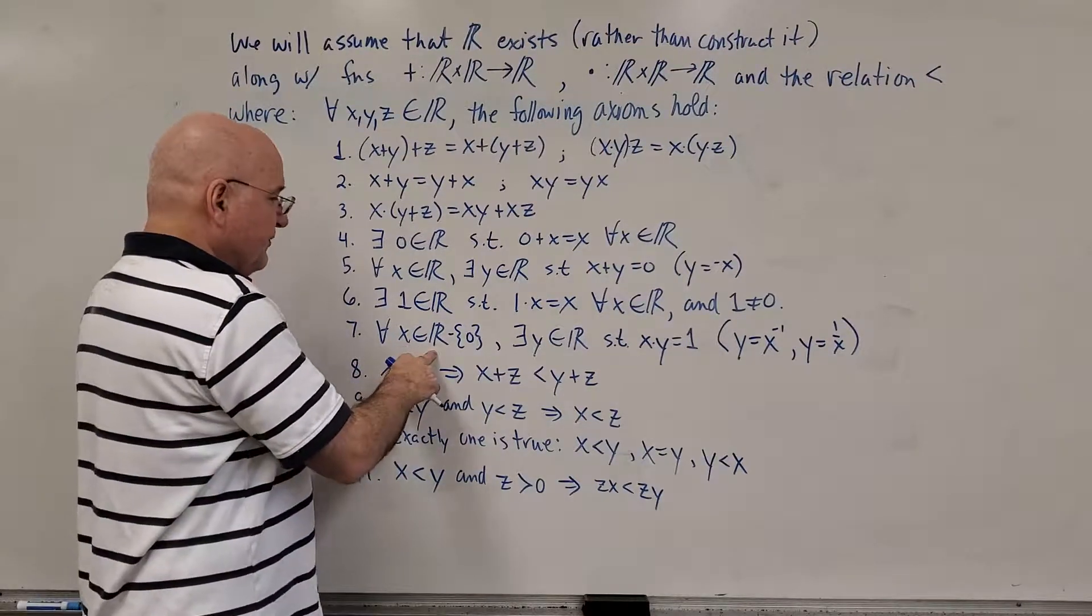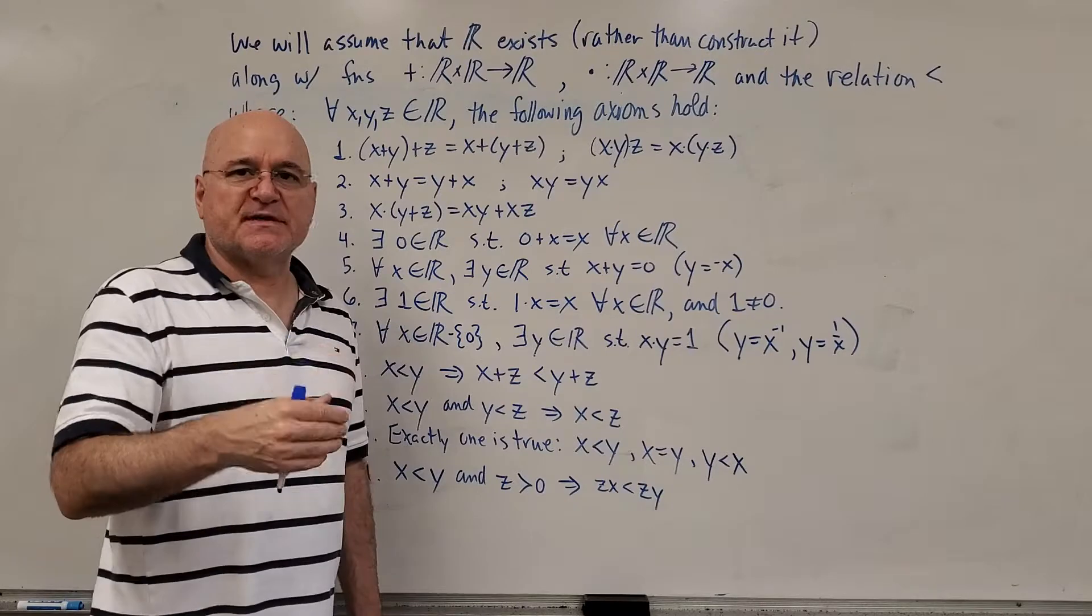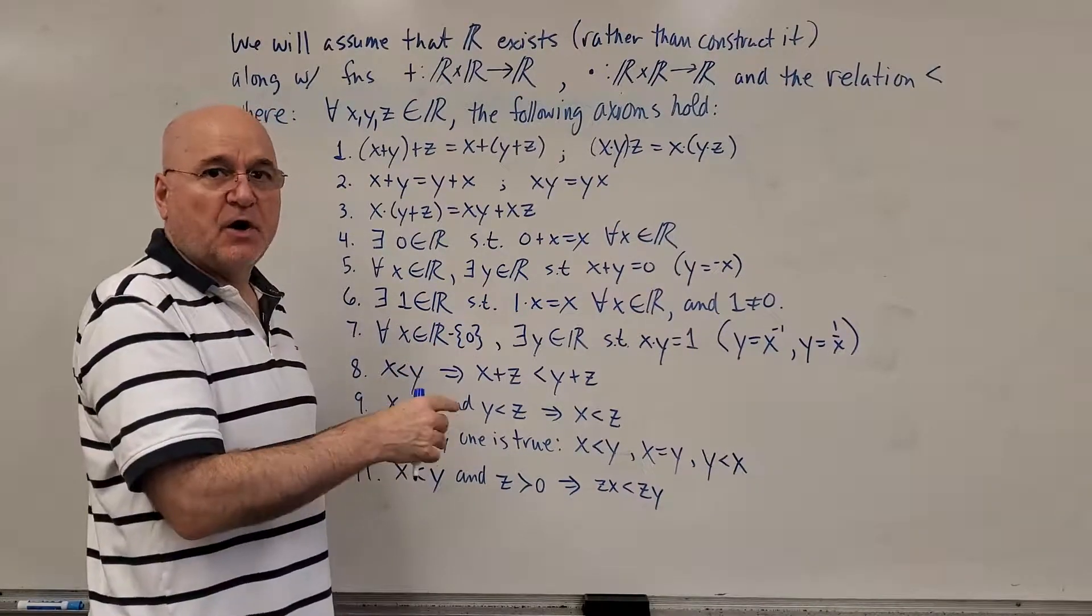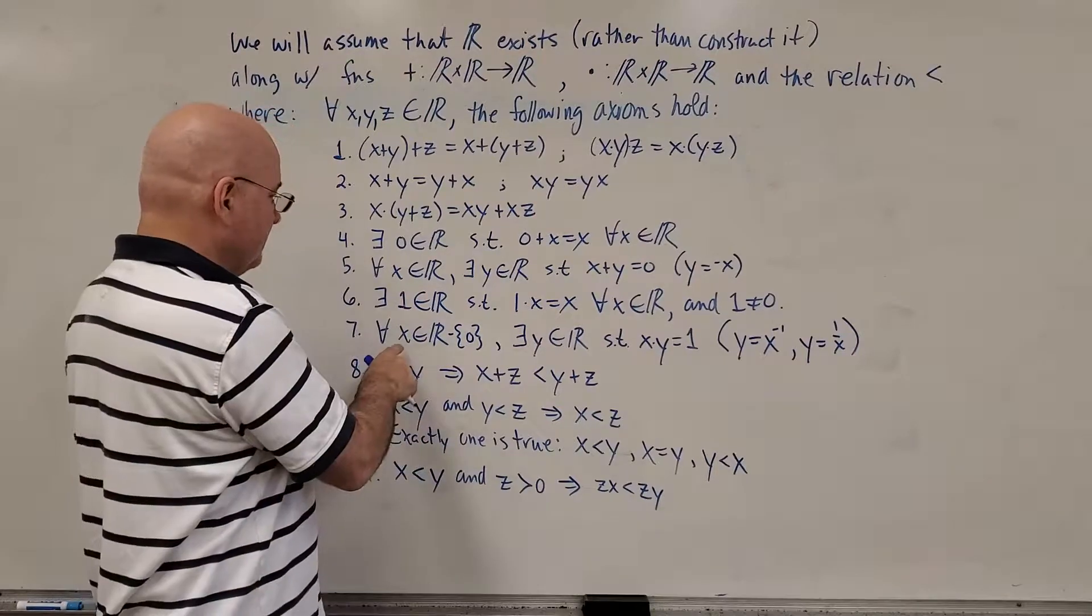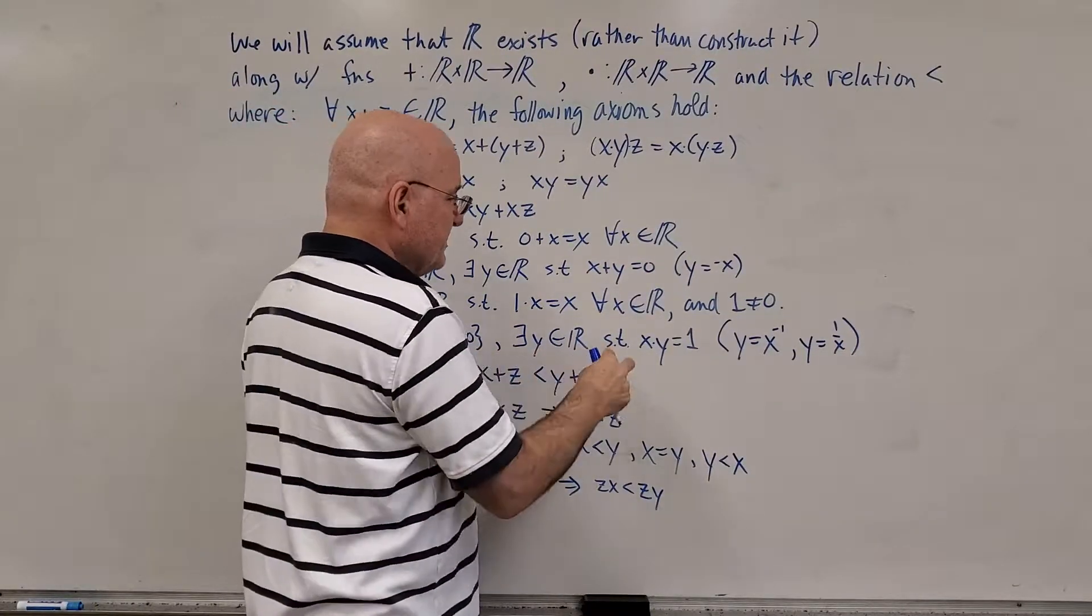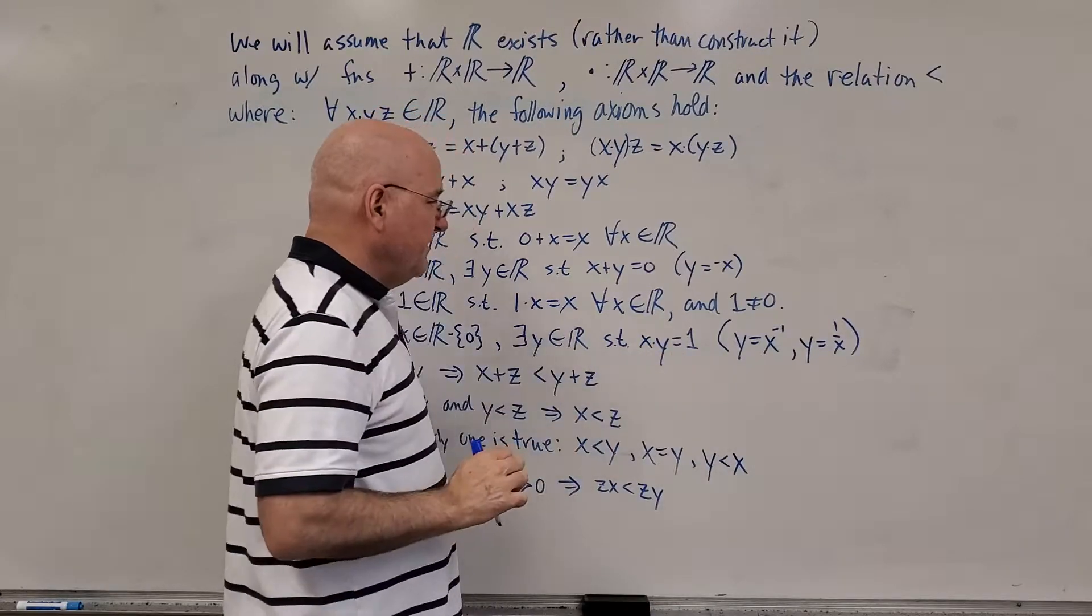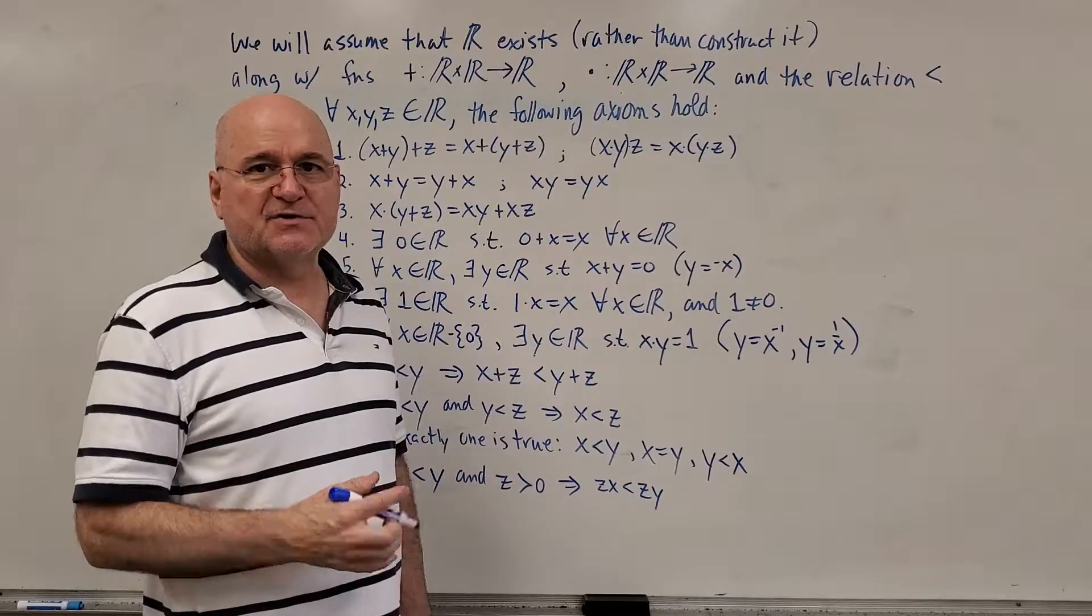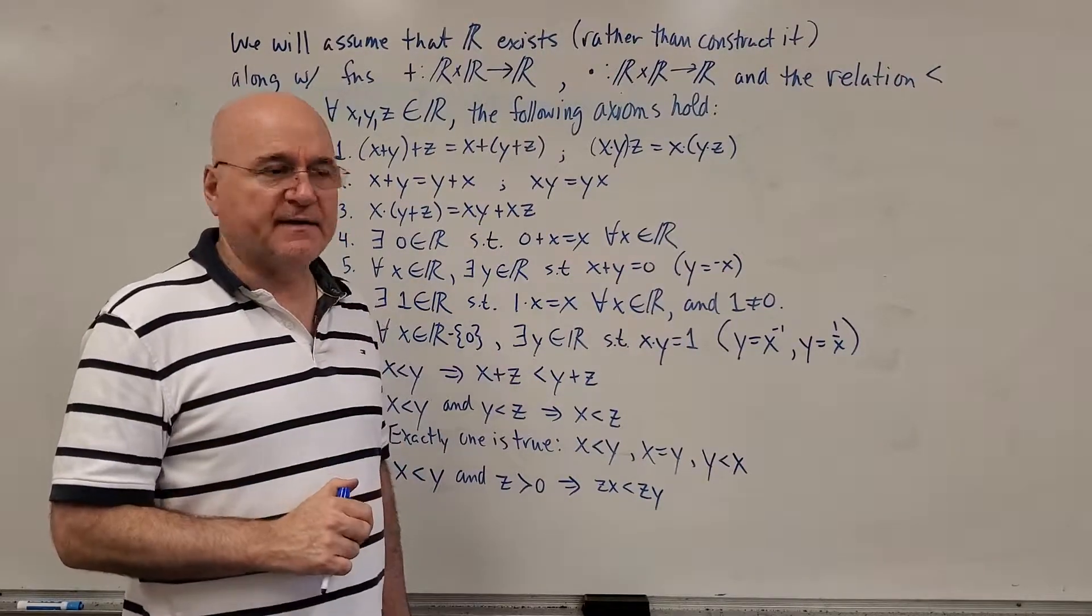That's the multiplicative identity. For every x in the set of real numbers, except for zero, this is the set of all real numbers, take away the number zero. So for all positive and negative real numbers, x, there is a corresponding y in the real numbers, such that when you multiply them together, you get one. That's considered, that's called the multiplicative inverse.